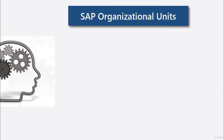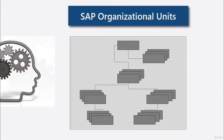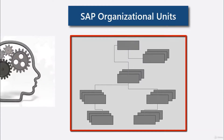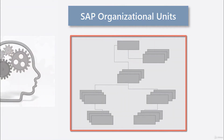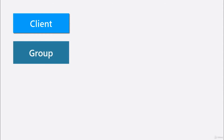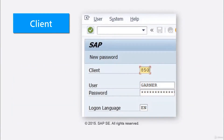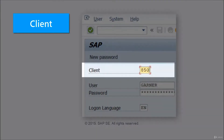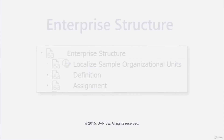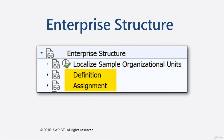SAP ERP has its own set of organizational units which must be employed by each enterprise. At the very beginning is the client — a three-digit code. It is at the top of the hierarchy and includes an entire group, some subgroups, or even a single enterprise. Hence, the client defines the operational scope. You may remember the log-on screen where the first field is the client. Within a client, other units are first defined and then assigned to one another according to the SAP system unit hierarchy or net.